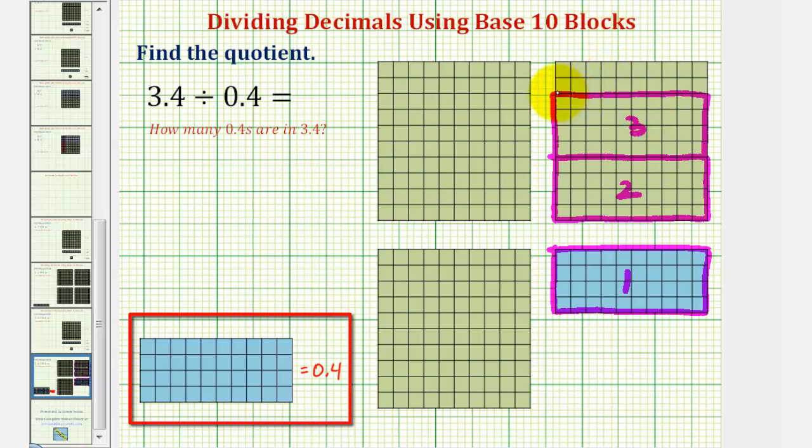Notice here we can take two of these longs and two of these longs here to make a fourth copy of four longs or 0.4. Here's a fifth copy.